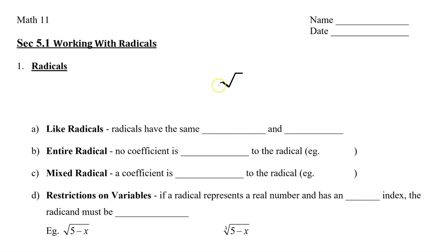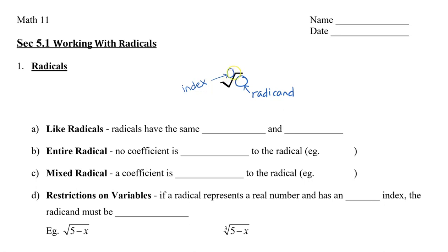This is a radical symbol written right here. The stuff, or the part inside underneath the radical symbol, is called the radicand. Now to the left of the radical, written up here in a small number, is called the index. Now usually there is no number because we usually square root, which means the number would be 2. So if the number is 2, we don't tend to write the number 2.